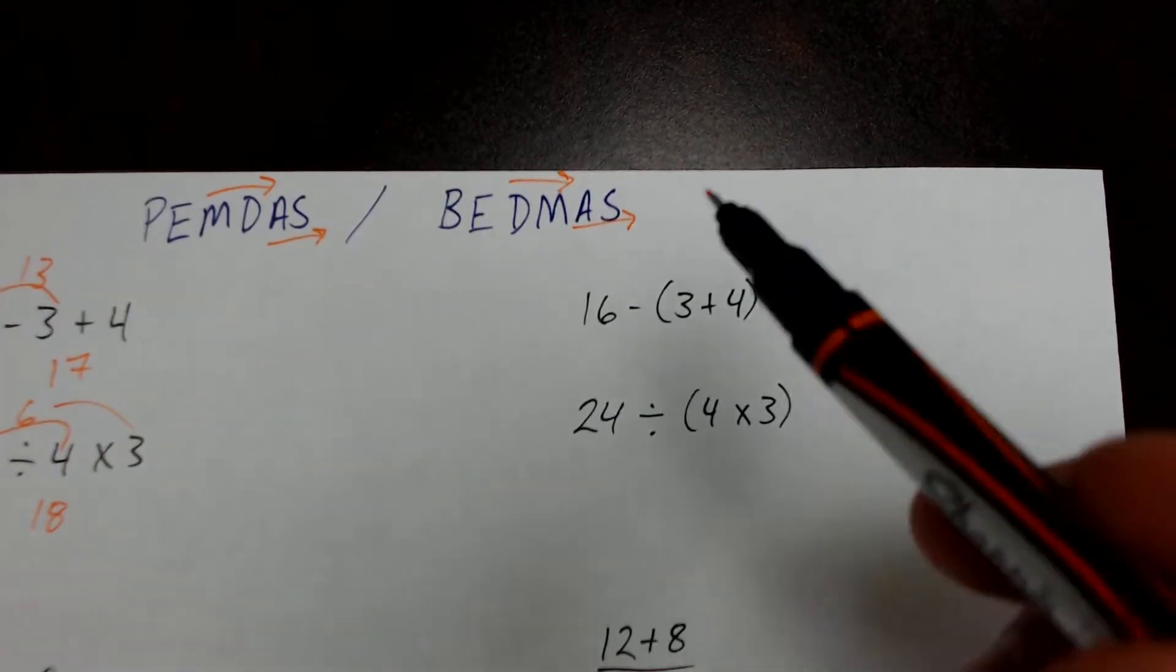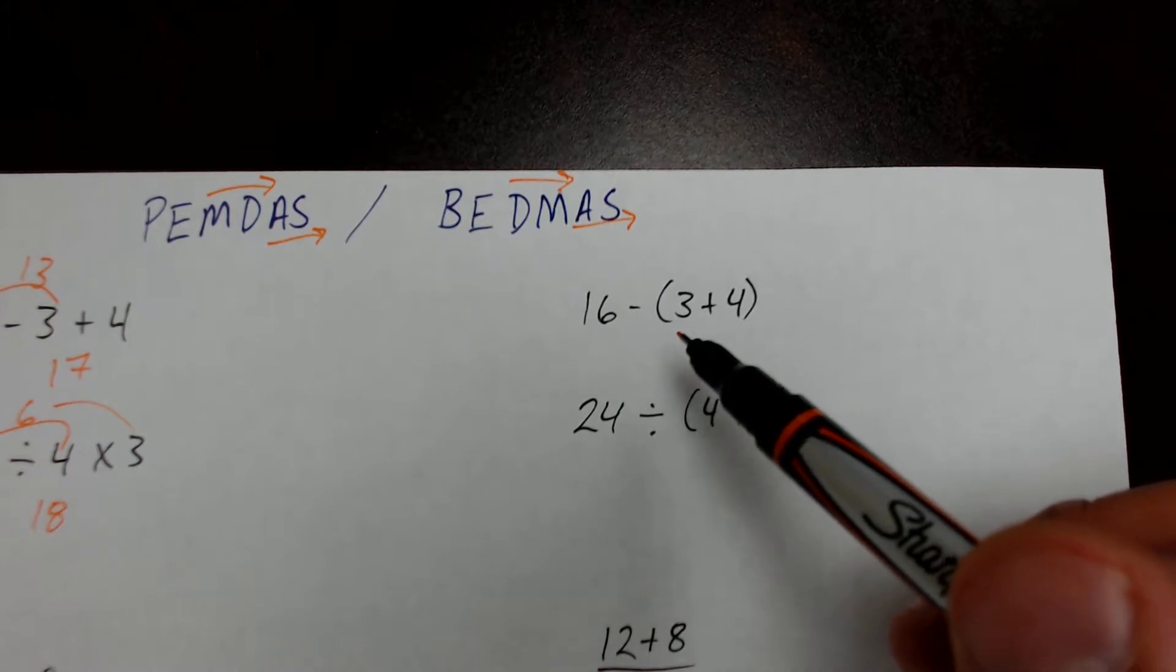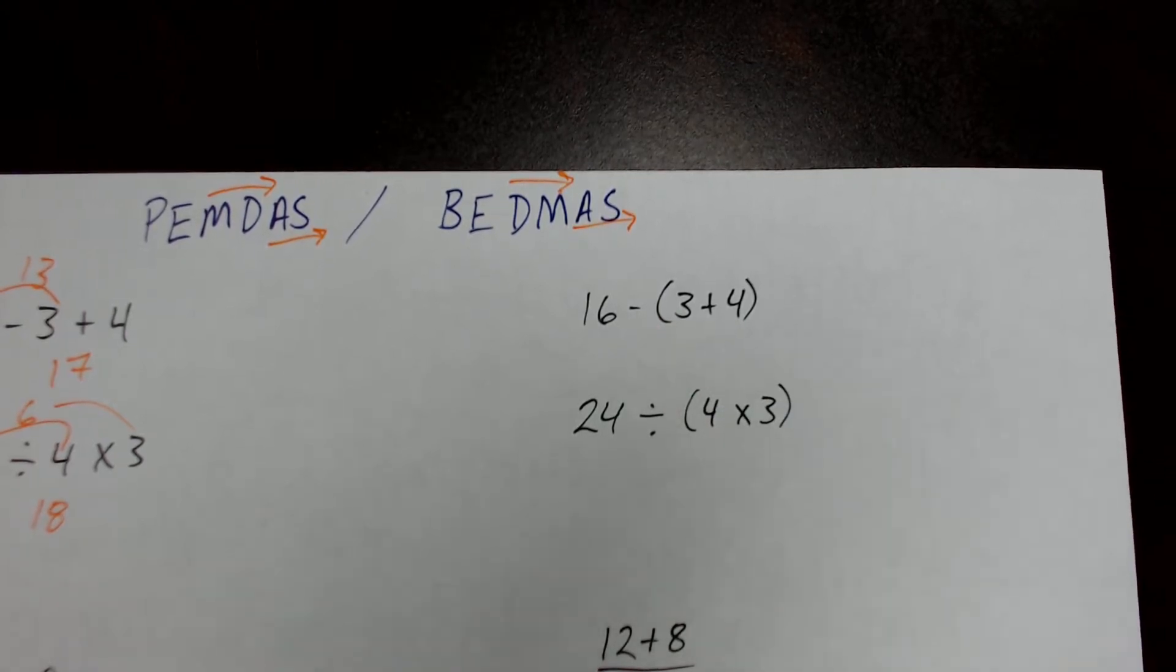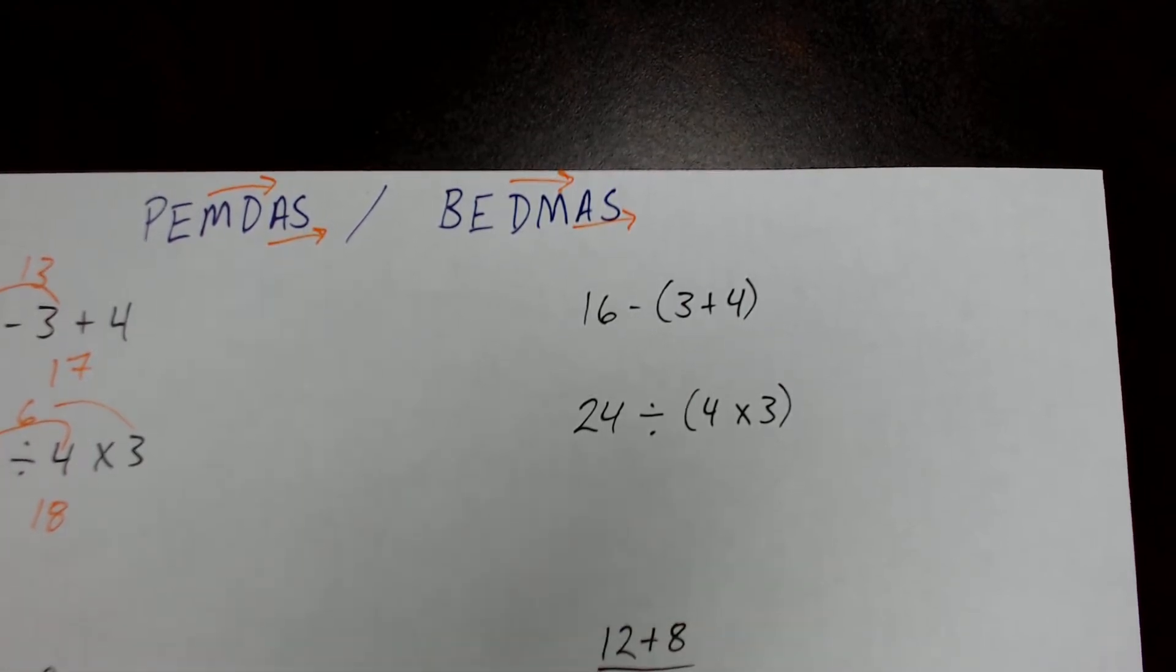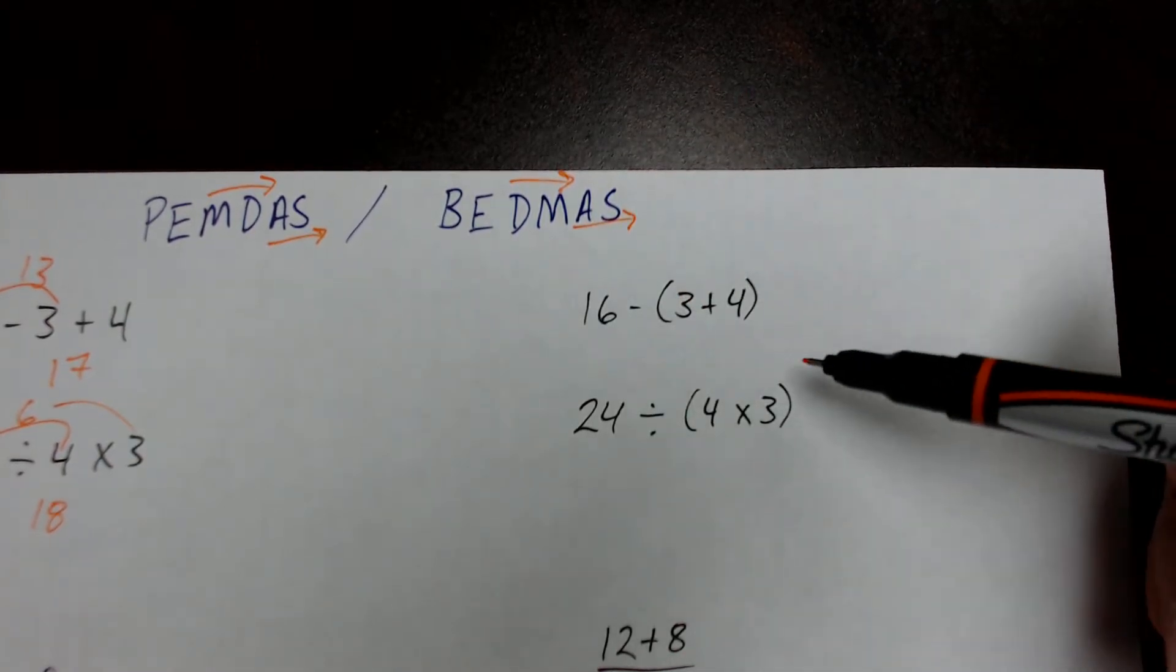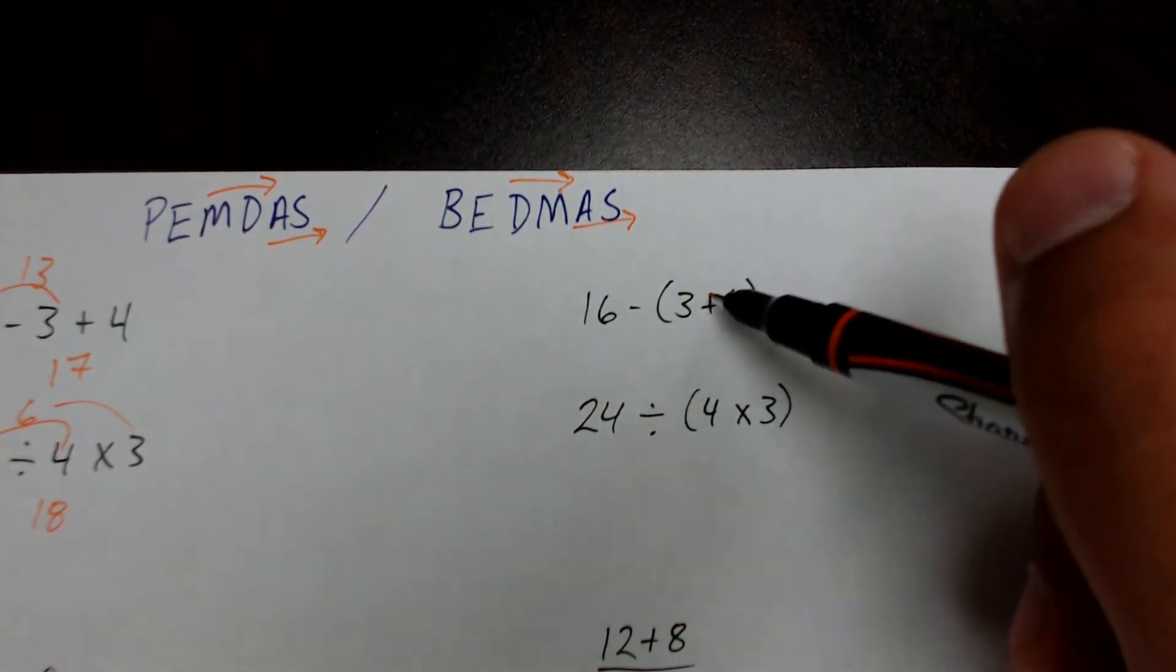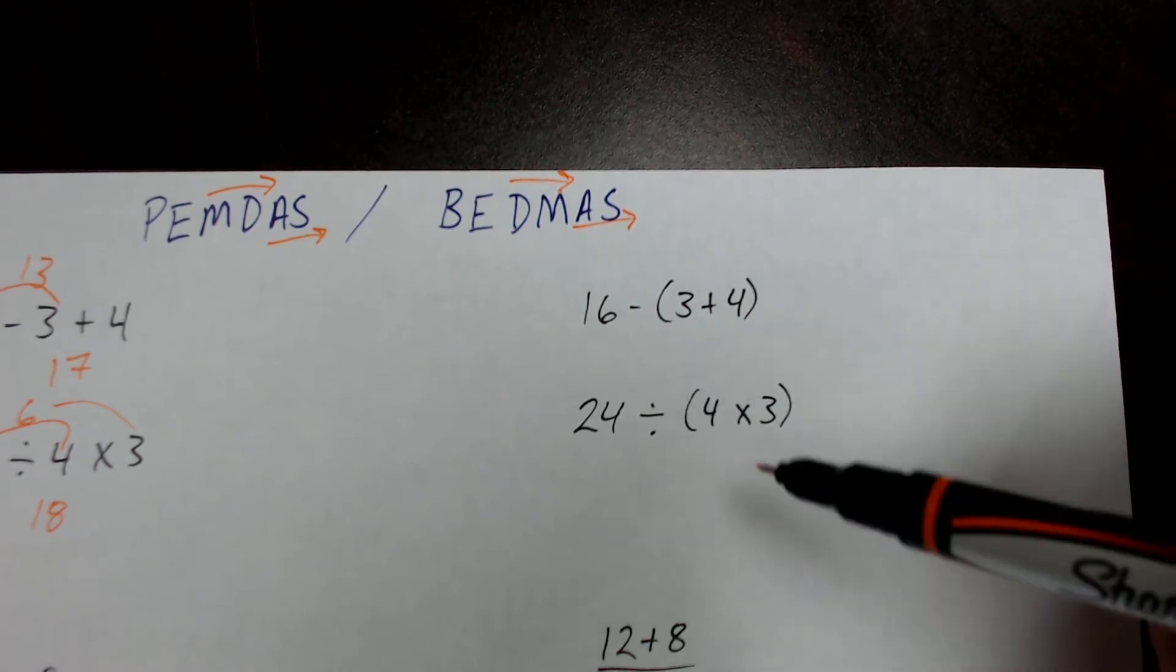Now, what if I throw parentheses, or some people refer to them as brackets, into the mix? Well, brackets, you'll notice, come in front of multiplication, division, and addition and subtraction. So whenever we see brackets or parentheses in our problem, we are required to solve whatever is inside of the parentheses first.